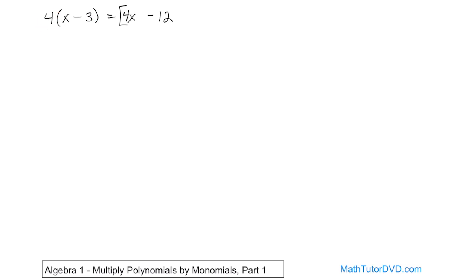Let's ratchet up the complexity. What if you had c times c minus 2? You have a binomial times a monomial on the outside. You take c and distribute it to each term. c times c is c squared — you add the exponents, 1 plus 1 gives you c to the power of 2. Then minus c times 2 is 2c. So the answer is c squared minus 2c.